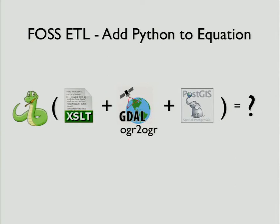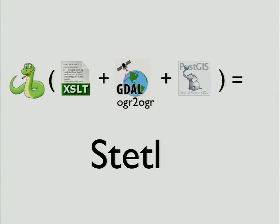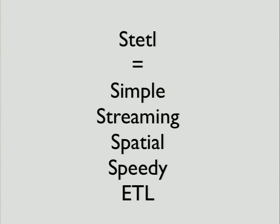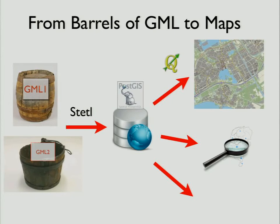I've done a lot with shell scripts, but Python is ideal. Python makes a lot of sense in the geospatial world because it integrates with all of the existing libraries. This is really what STETL is about — it combines the basic tools. The abbreviation is written like this. It's about Simple, Streaming, Spatial, and Speedy ETL. That's what it tries to stand for.